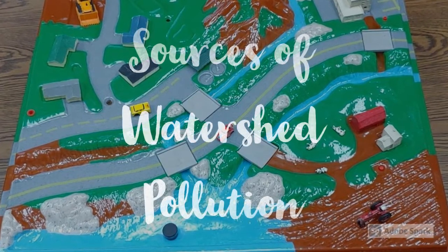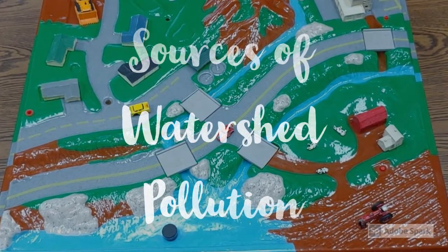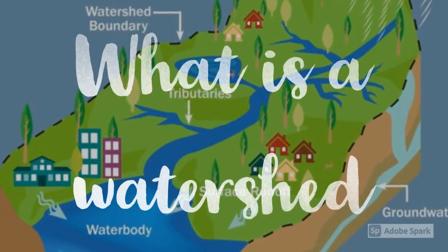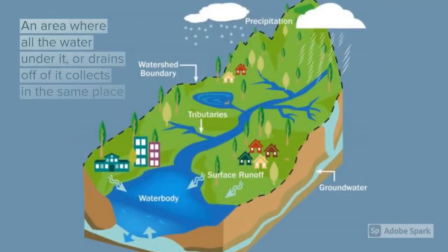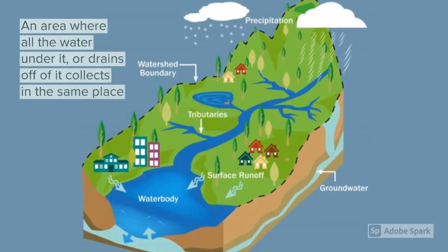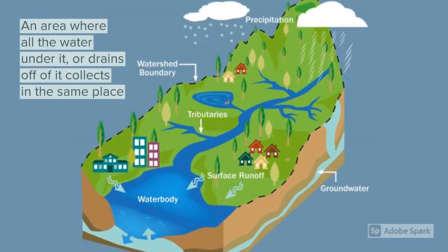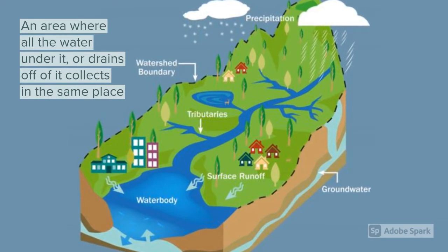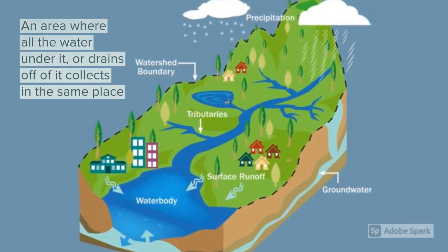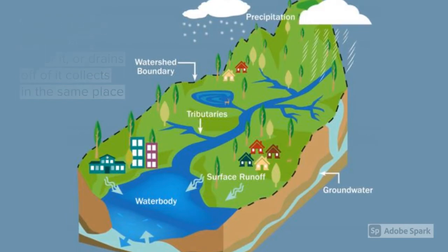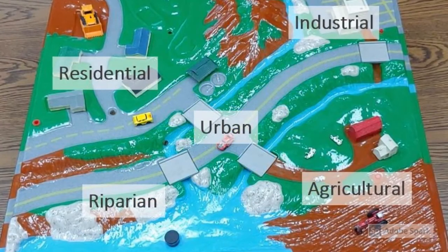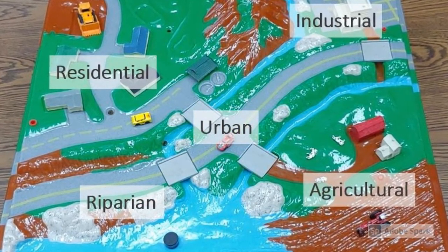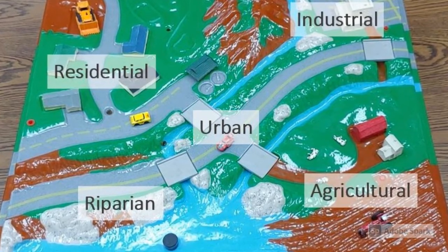Today we're going to talk about some different sources of water pollution within a watershed. A watershed is an area where all the water underneath it or draining off of it collects in the same place, so when it rains or snow melts and runs off the land, all that water ends up in a river or lake. We'll use this watershed model to demonstrate how different areas within a watershed contribute to water pollution.